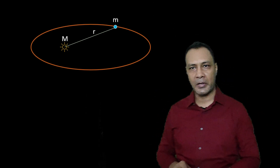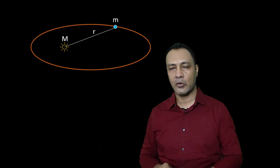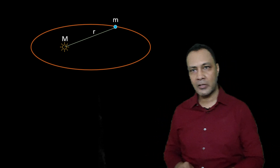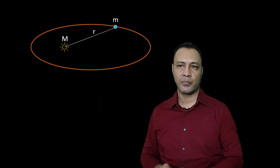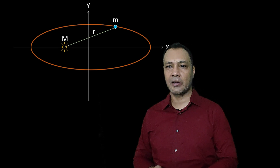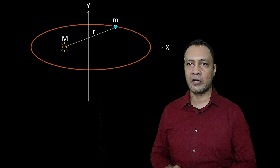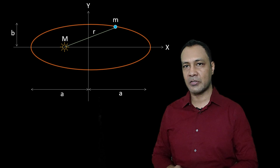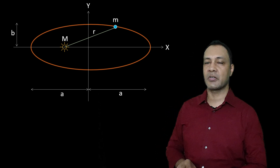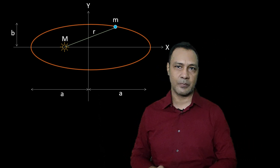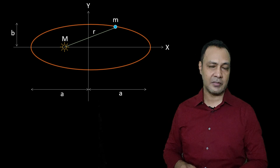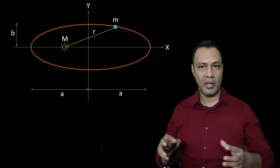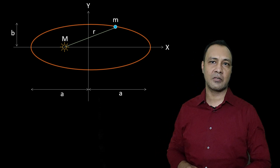A planet of mass m is revolving around the Sun of mass capital M in an elliptical orbit. In an elliptical orbit, the distance of the planet from the Sun keeps on changing. The origin of the coordinate system is at the center of the ellipse. This ellipse is characterized by two terms: A is the length of the semi-major axis and B is the length of the semi-minor axis. Major means the bigger axis and minor means the smaller axis. This ellipse is deviated with respect to a circle; if A and B become equal, that becomes a circle.